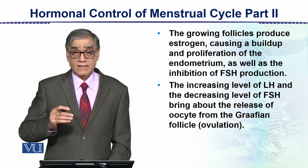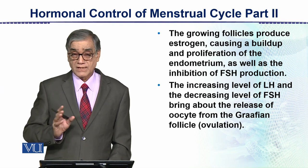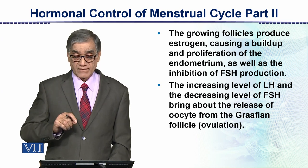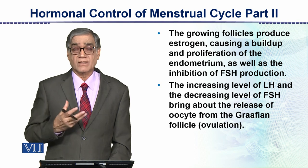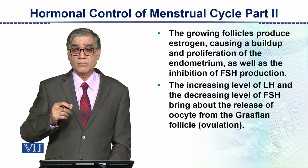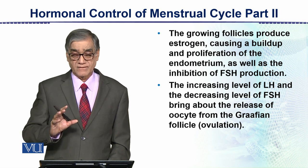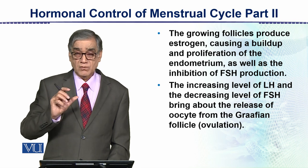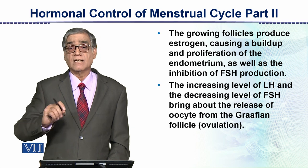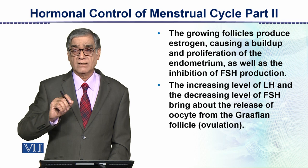Now the next phase is very important. The increasing level of LH — luteinizing hormone — and the decreasing level of FSH — this is a stimulus. This stimulus in fact stimulates the Graafian follicle to break and to release the oocyte. So this stimulus of decreasing FSH and increasing LH stimulates the ovulation process.